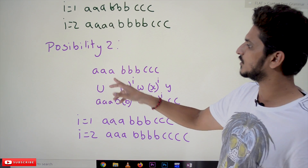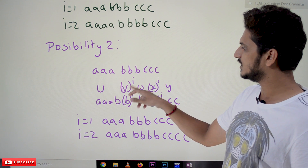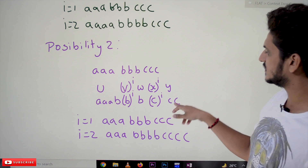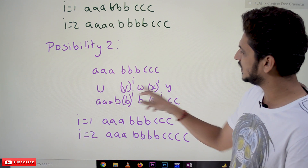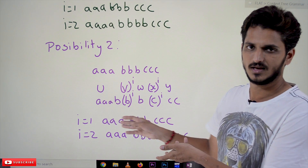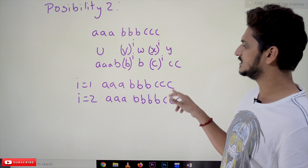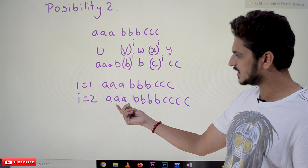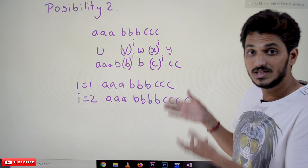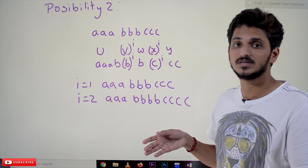Taking one more possibility: U = A A A B, V = B, W = B, X = C, Y = C C. If we keep on pumping V and X — this B C combination pumps — we are missing A. For i=1 we get A A A B B B C C C, and for i=2 we get A A A B B B B C C C C. In this possibility also we are not going to generate strings that are present in the language.